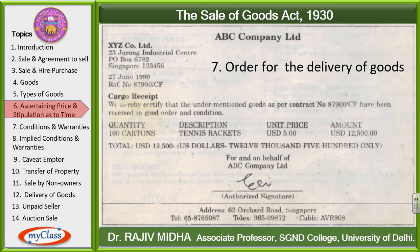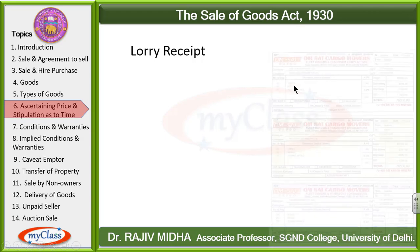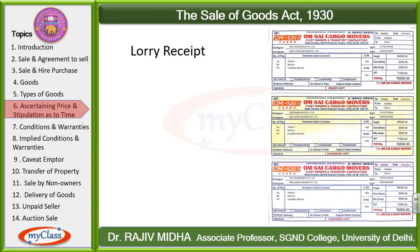Order for Delivery of Goods is issued when goods are delivered at a cargo point. Lorry Receipt (LR) is issued by public carriers — transport agencies that move goods from one place to another by road. When goods are sent via a public carrier through roadways, they issue a lorry receipt.